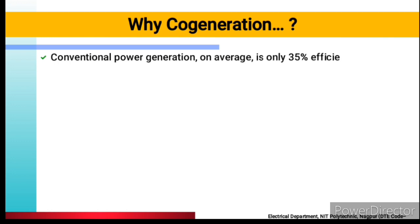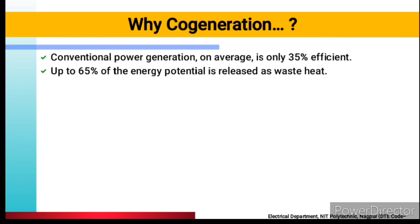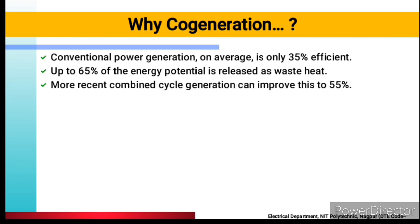A conventional power plant provides only about 35% efficient energy; up to 65% of energy potential is released as waste heat. When you are using a fuel of 100%, only 35% of energy is generated and 65% is totally wasted. More recent combined cycle generation can improve this to 55%. If we use co-generation, which is also called combined cycle generation, we can improve efficiency from 35% up to 55%.